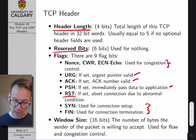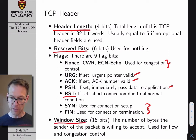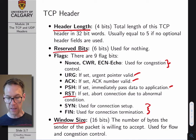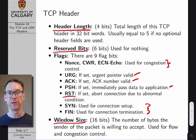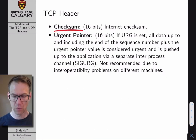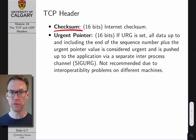Finally, we have our window size, which we've talked about already — this is the number of bytes the sender of the packet is willing to accept before an acknowledgement needs to be sent, so this is the sliding window ACK field. The checksum field holds the internet checksum that we've studied when looking at error detection.